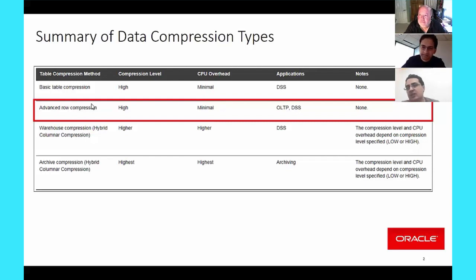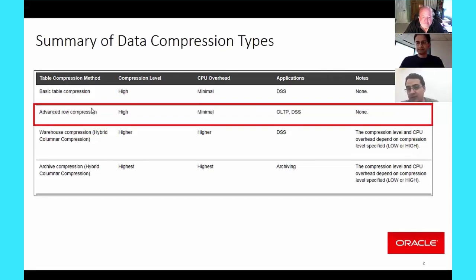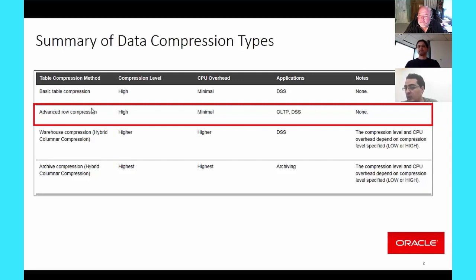For customers, just try to follow the same logic you follow for non-compressed blocks—it should be quite similar. When you expect row chaining and when you don't is more or less the same rules for OLTP compression or advanced row compression.